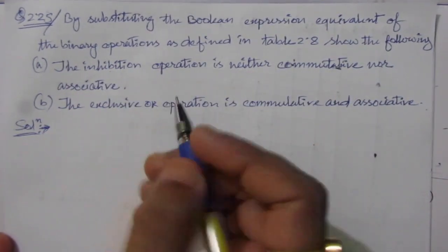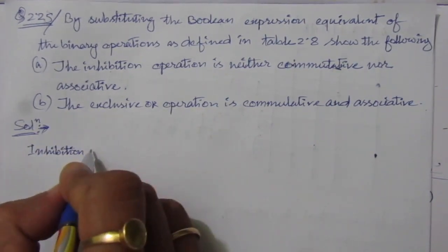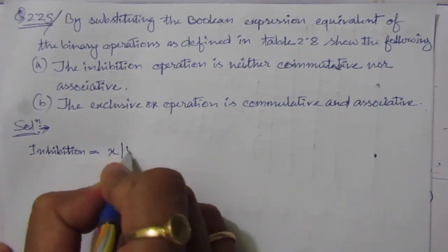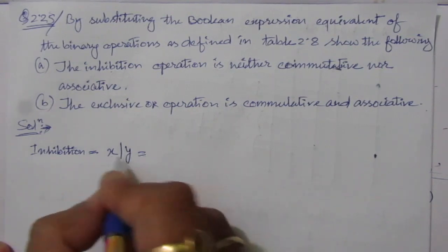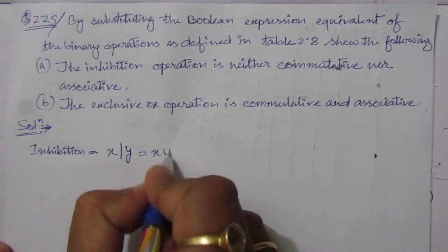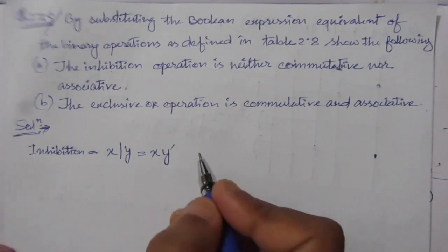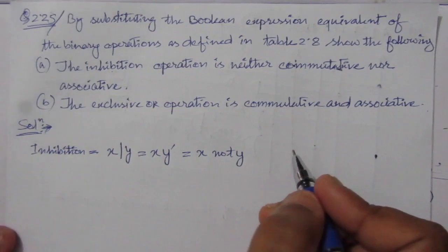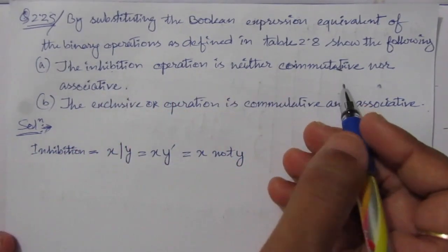Inhibition is denoted as follows: if there are two variables x and y, then the inhibition symbol is given by x inhibition y. This is nothing but x NOT y, meaning x inhibition y equals x·y̅ (x AND y complement). So first of all, we have to prove that this inhibition operation is neither commutative nor associative.